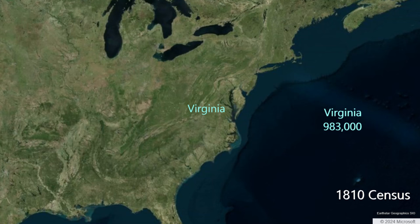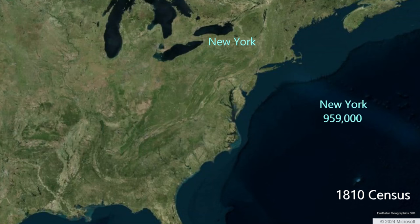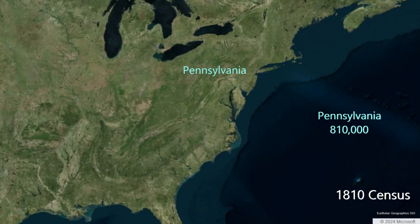Virginia, the largest state, has 983,000 people in 1810. It's important to remember that Virginia in 1810 also includes modern West Virginia. New York State, the second largest state, is quickly catching up to Virginia's population, almost approaching one million residents in 1810, nearly doubling its population in 10 years. Pennsylvania has 810,000 residents in 1810.